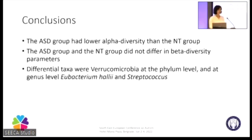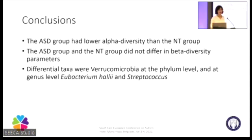To conclude: our ASD group had lower alpha diversity — that is, fewer species — we could not see differences in beta diversity parameters on our PCoA plot, and the differential taxa identified were Verrucomicrobia at the phylum level, and Leobacterium holly and Streptococcus at the genus level. With that, I would like to thank you for your attention.